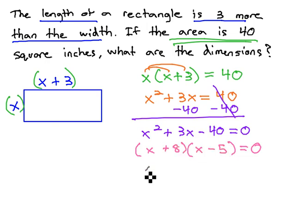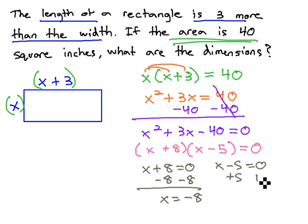And then we can set each factor equal to zero, x plus eight equals zero, and x minus five equals zero, and solve those quickly to find out x equals negative eight, or by adding five, x is equal to five.